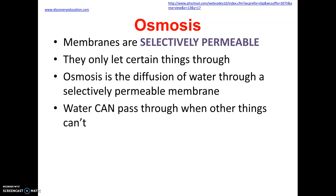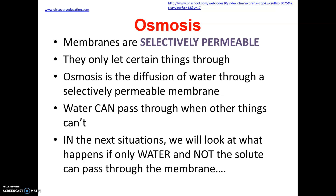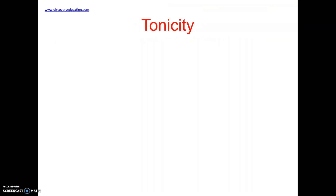Osmosis is the movement of water from higher to lower concentrations through a membrane. A lot of times when other things cannot pass through, the water can. In the next situations, we're going to look at what happens if water can pass through the membrane but the solutes cannot. There's a word for this — it's called tonicity.